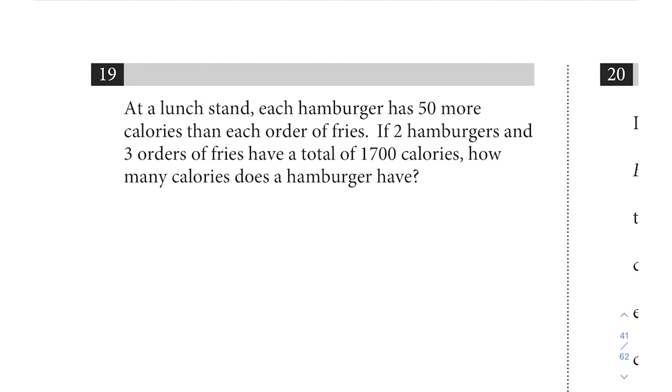Hi, this is Chris and here we are going to finish up section 3 of practice test 3 with questions 19 and 20, our last couple of grid-ins. Question 19 says: At a lunch stand, each hamburger has 50 more calories than each order of fries. If 2 hamburgers and 3 orders of fries have a total of 1700 calories, how many calories does a hamburger have?